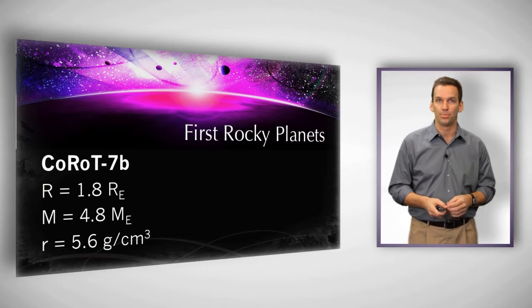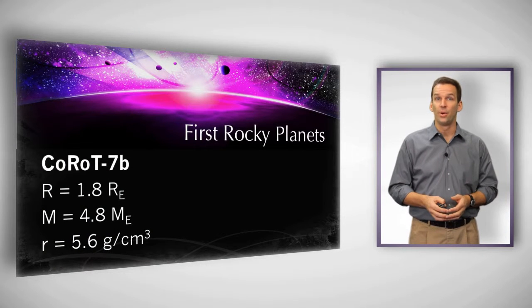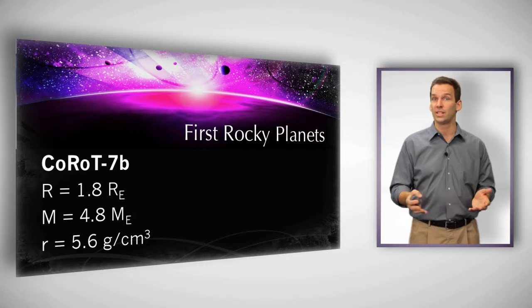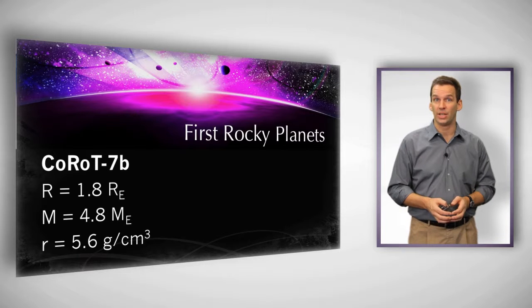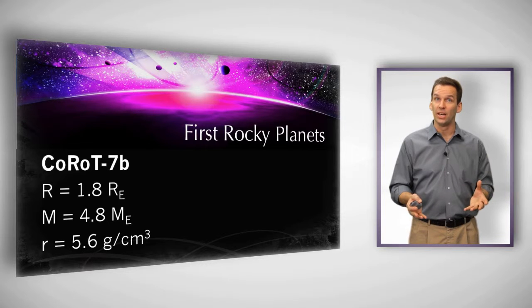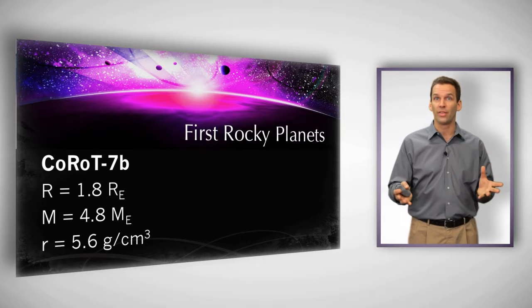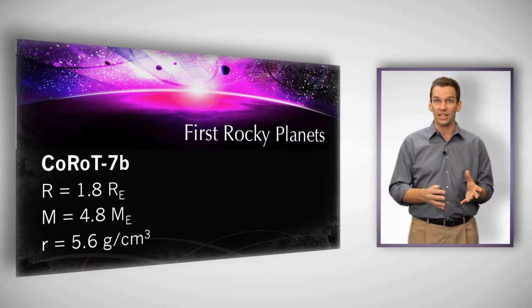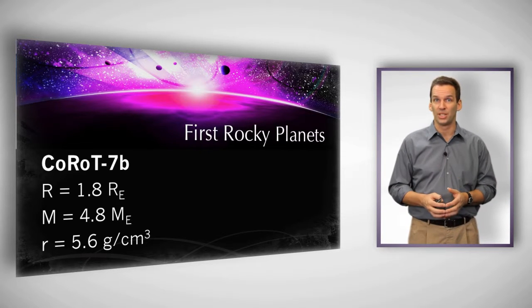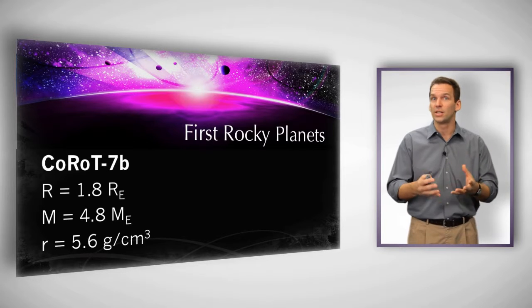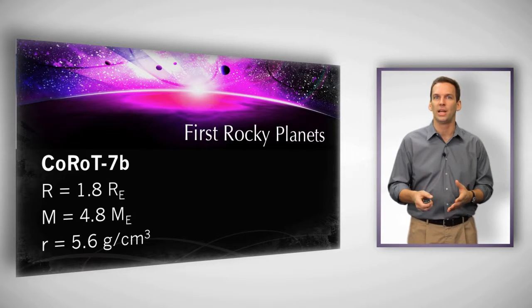One of those, a planet called CoRoT-7b, astronomers found had a radius 80% larger than that of the Earth and a mass that was about five times that of the Earth, which gave it a density of 5.5 grams per cubic centimeter. For comparison, Earth's density is right at 5.5 grams per cubic centimeter, so it's very similar density, and it seems like we're beginning to find rocky planets.